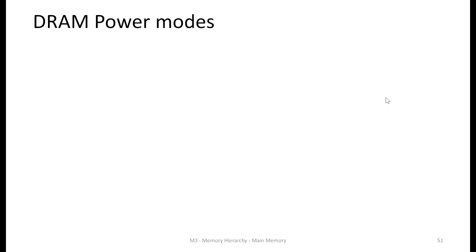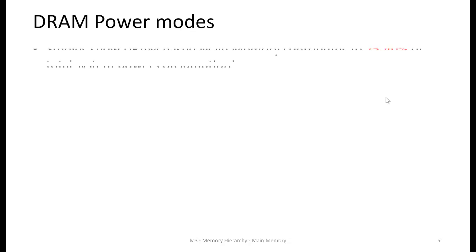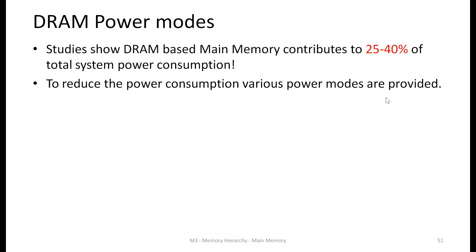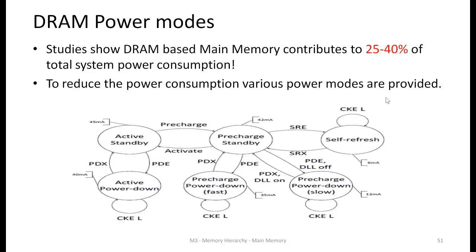Apart from refresh management, DRAM also has various power modes. DRAM-based main memory used in laptops, mobiles, and servers or enterprise systems contributes 25–40% of the overall system power consumption, which is huge. To reduce DRAM power consumption, power modes were proposed and implemented in hardware. We have a state diagram that I'll explain step by step.